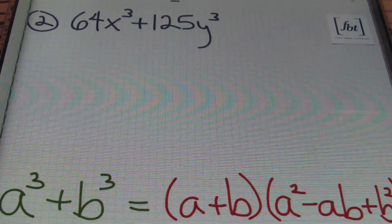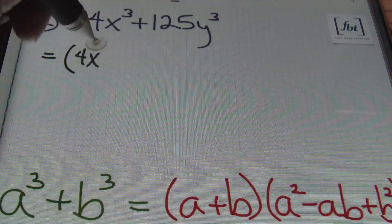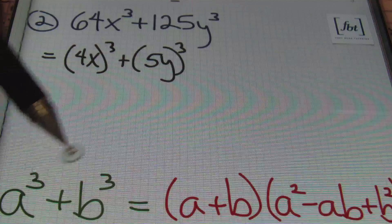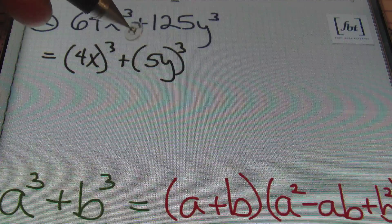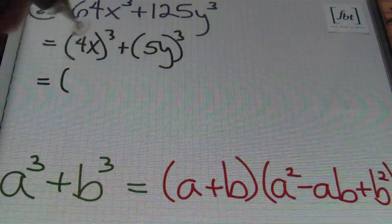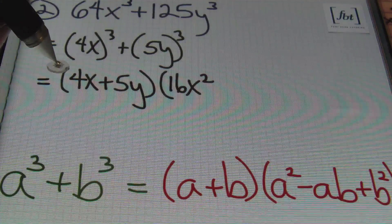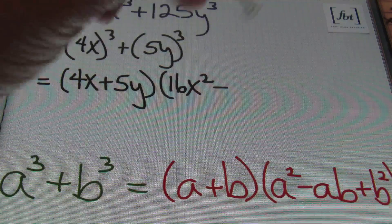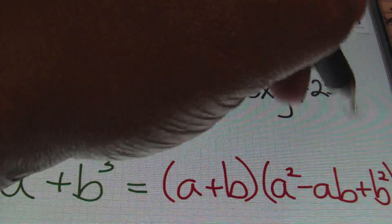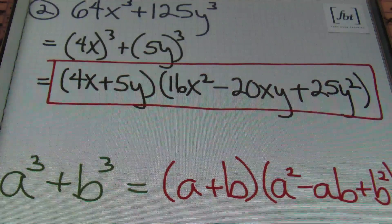Problem number two: 64x cubed plus 125y cubed. We rewrite this as (4x)³ + (5y)³, identifying a = 4x and b = 5y. Continuing the factorization, we get (4x + 5y)(16x² − 20xy + 25y²). That's the answer.